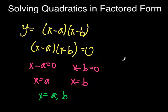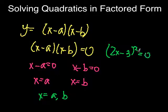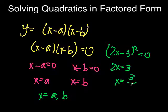This method works all the time, even if you have something like 2x minus 3 squared equals 0. All you have to do is apply a little algebra to get 2x equals 3 and x equals 3 halves.